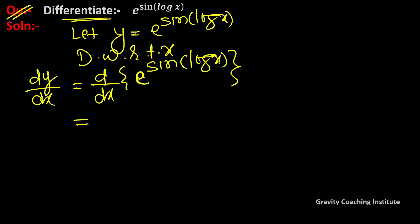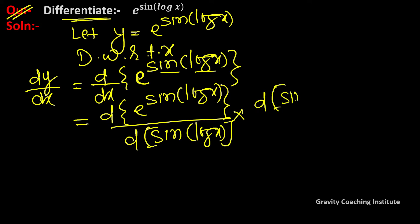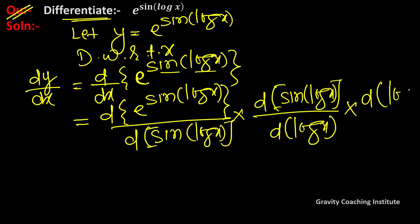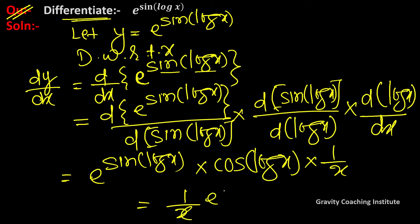According to the chain rule, first apply the e to the power x formula, then differentiate sin, then log x. So the result is e to the power sin(log x), multiplied by cos(log x), multiplied by 1/x. Therefore, dy/dx equals e^(sin(log x)) · cos(log x) · (1/x).